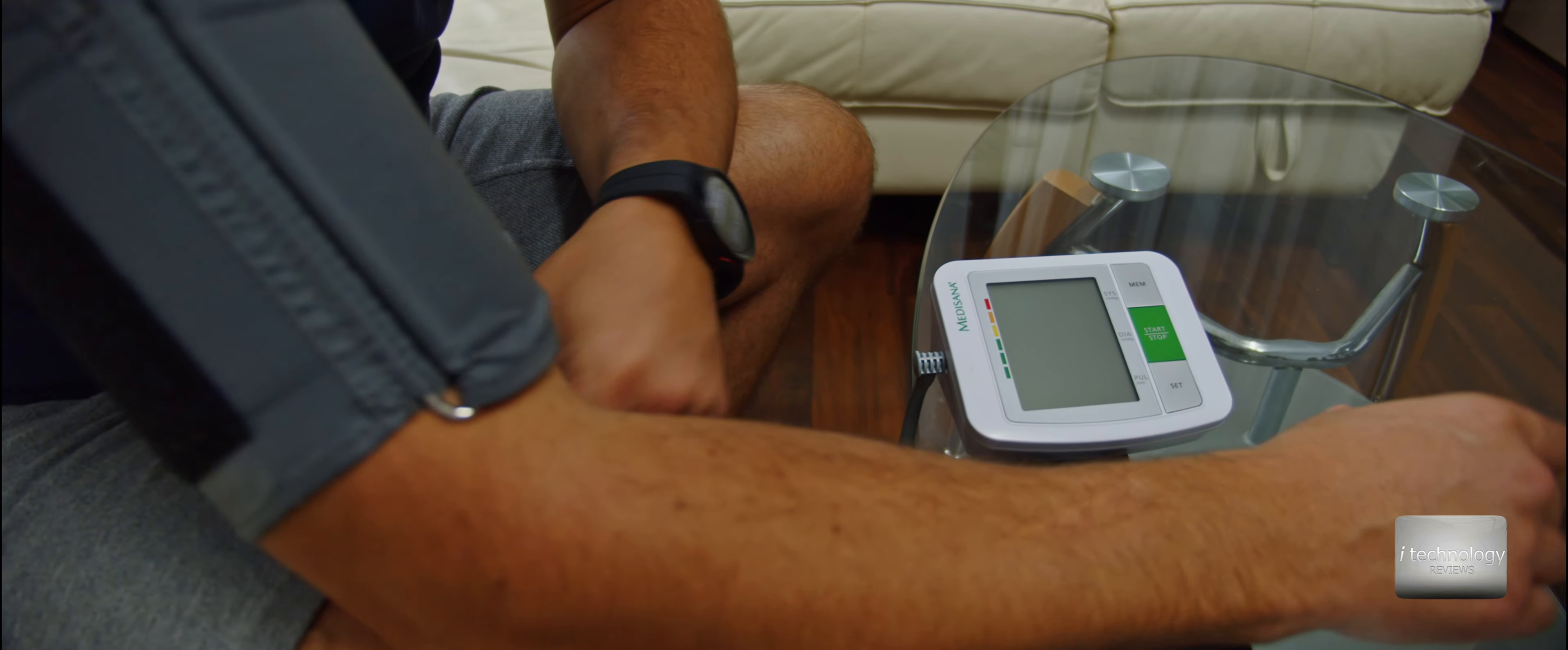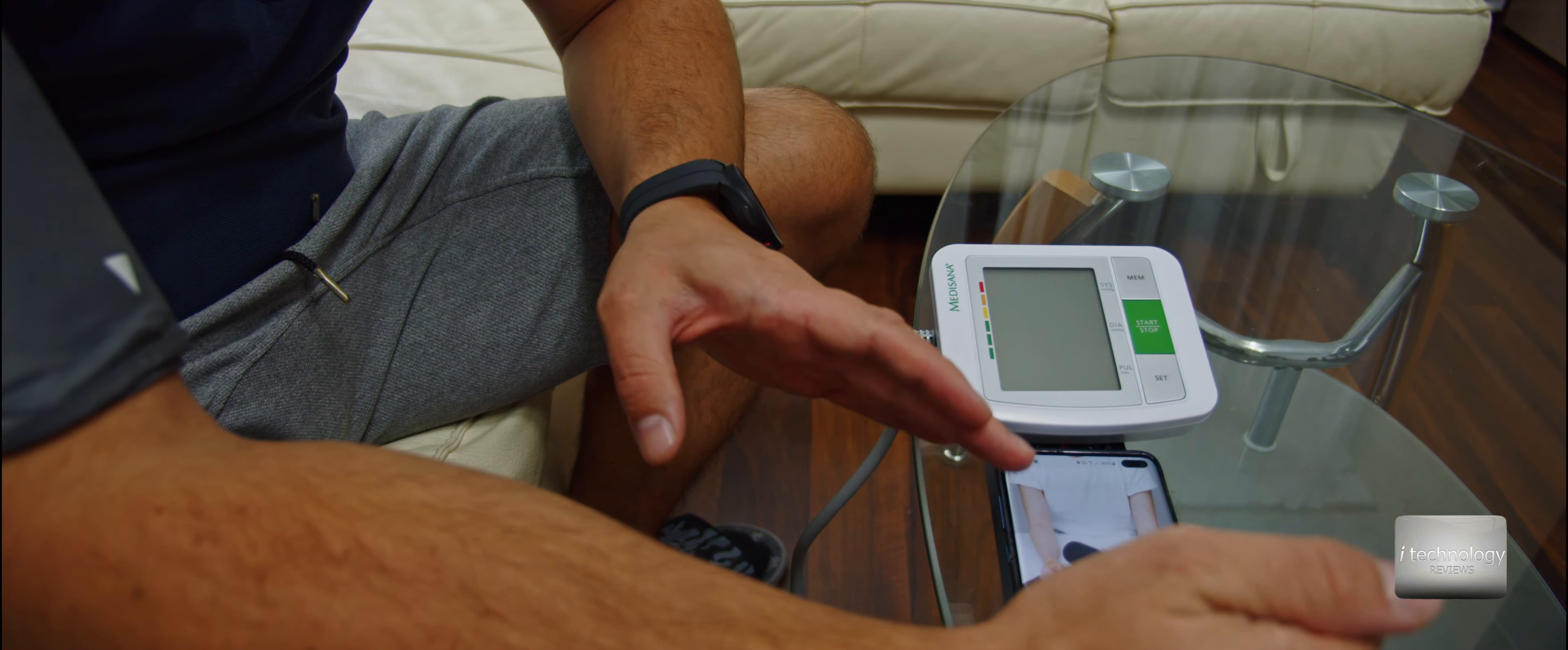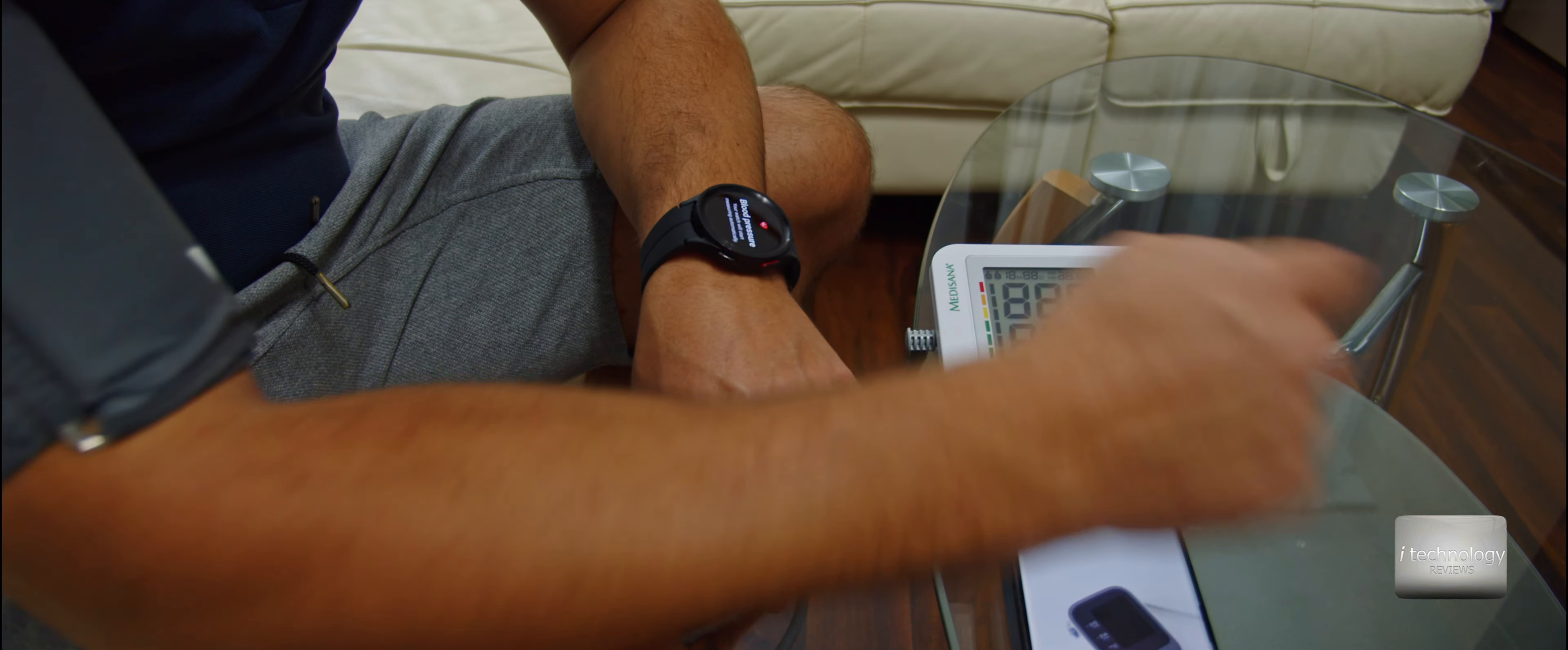You've got to leave your arm loose, do not hold anything in your arm, and do not talk or move during this measure. While you're making this calibration, you've got to be calm. Before this, don't do sport activities or drink coffee, because it will not be accurate. Click next, start your blood pressure monitor now.